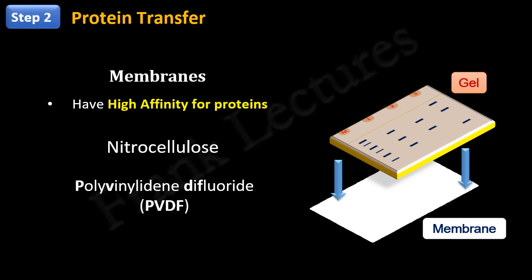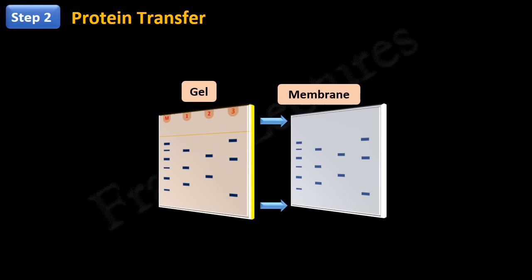Let's understand how protein transfer takes place. The method used to transfer proteins from gel to membrane is known as electrophoretic transfer. In this method, electric current is used to elute proteins from gel and transfer them to membranes.